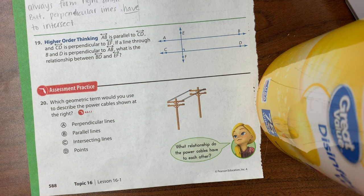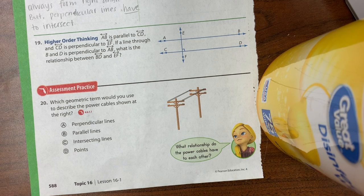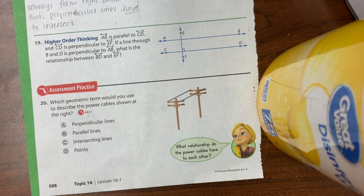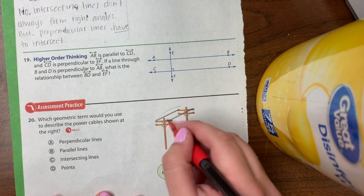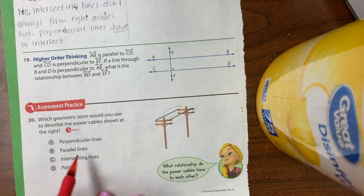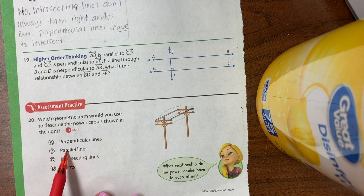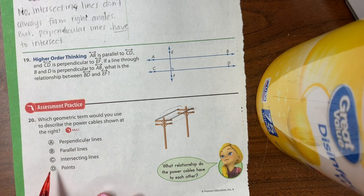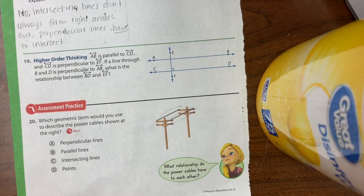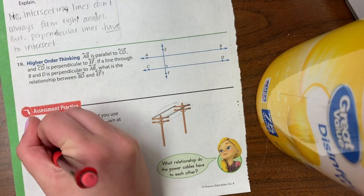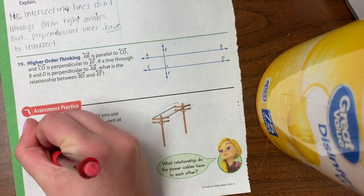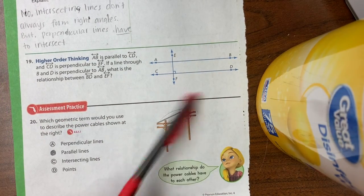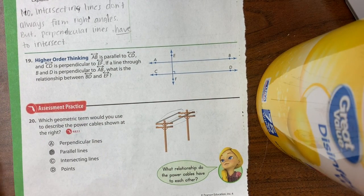Let's go to 20. Which geometric term would you use to describe the power cables shown at the right? So your power cables are this and this. Would they be perpendicular that form 90 degrees? Parallel that never touch? Intersecting or points? And it would be parallel. So again, go back to these two and go over them and go check back over your work.